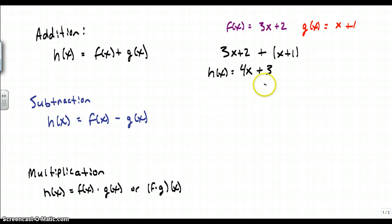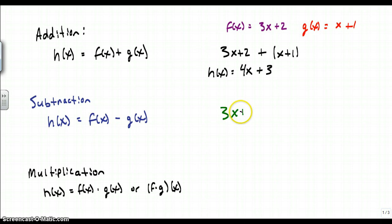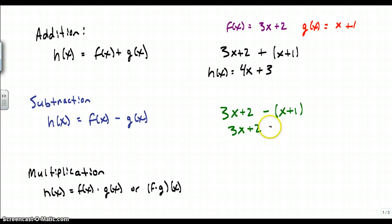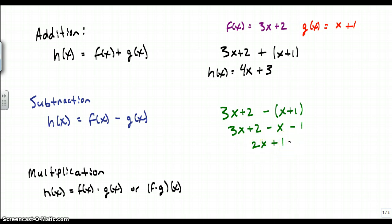The next example is subtraction. Make sure you do them in the right order, because subtraction order matters. We have h of x equals f of x minus g of x, using the same two functions: 3x plus 2 minus (x plus 1). Make sure you distribute the negative. When I collect like terms, I get 2x plus 1. That is subtraction.